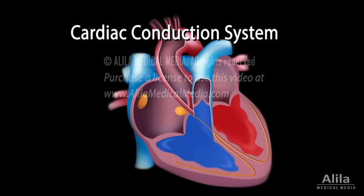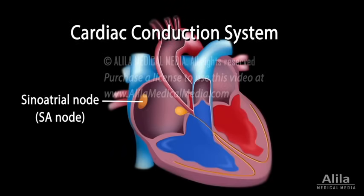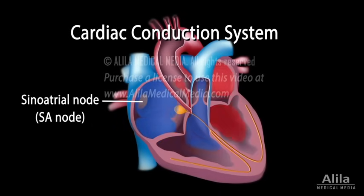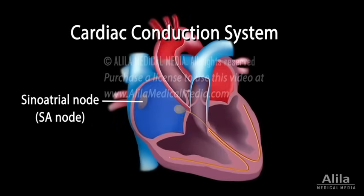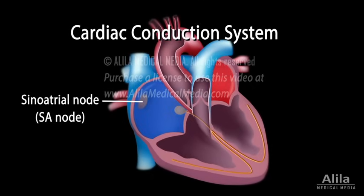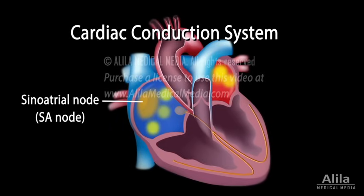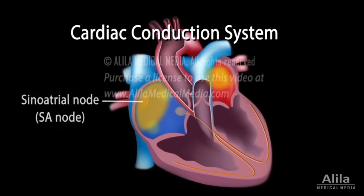The cardiac conduction system consists of the following components. The sinoatrial node, or SA node, located in the right atrium near the entrance of the superior vena cava. This is the natural pacemaker of the heart. It initiates all heartbeats and determines heart rate. Electrical impulses from the SA node spread throughout both atria and stimulate them to contract.